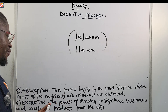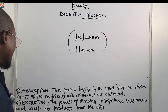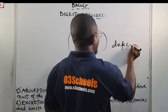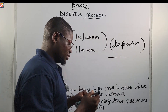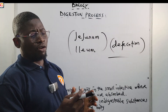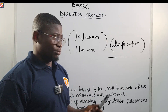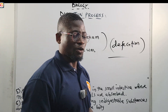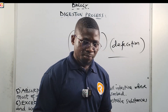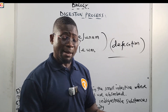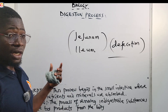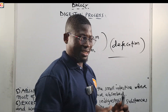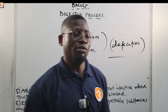The last process is excretion — the process of removing undigested substances and waste byproducts from the body through the process called defecation. We remove undigested food particles from the body through the anus. So those are the six processes of digestion: ingestion, mixing and movement, secretion, digestion, absorption, and excretion.